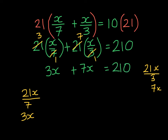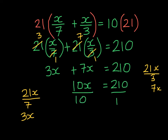So we have it all equaling 210. We then group the x's — they give me 10x, and it's equal to 210. The inverse operation I must perform is to divide by 10 on both sides. And x is equal to 21.